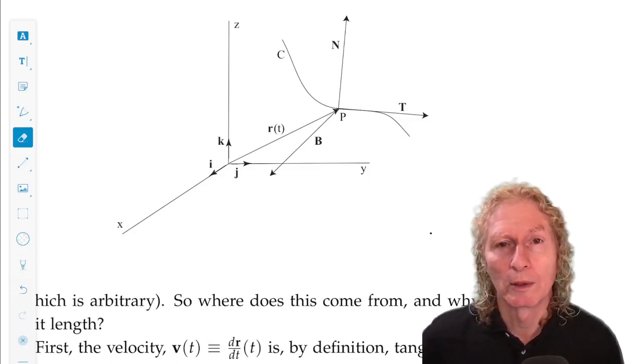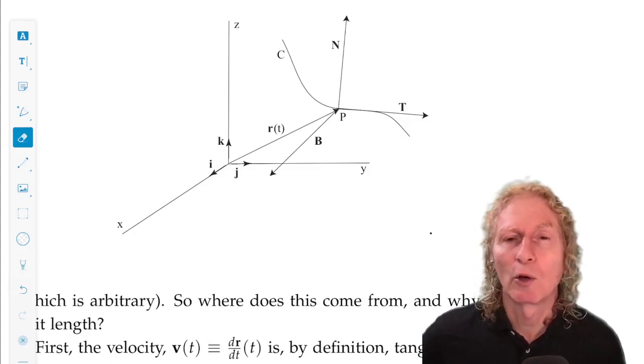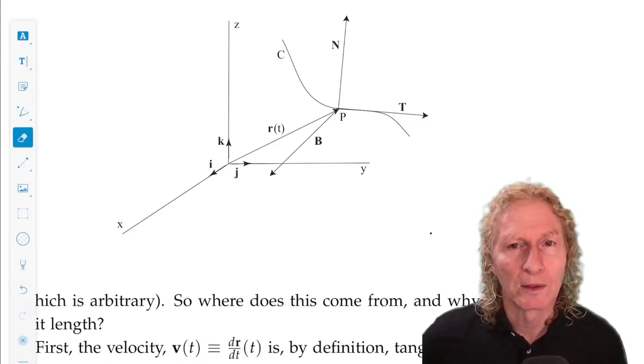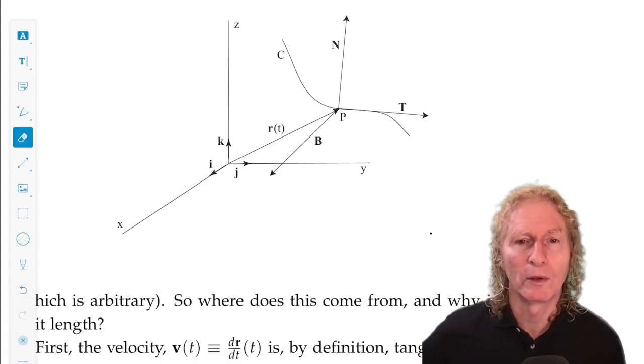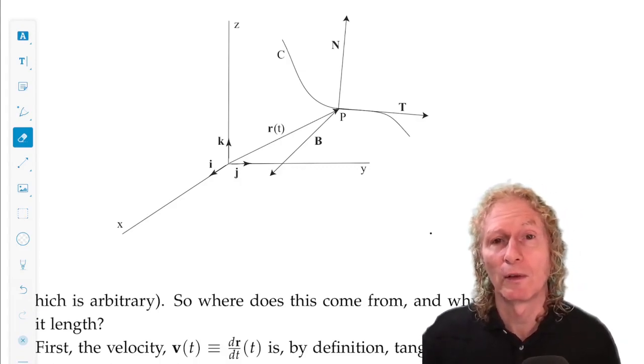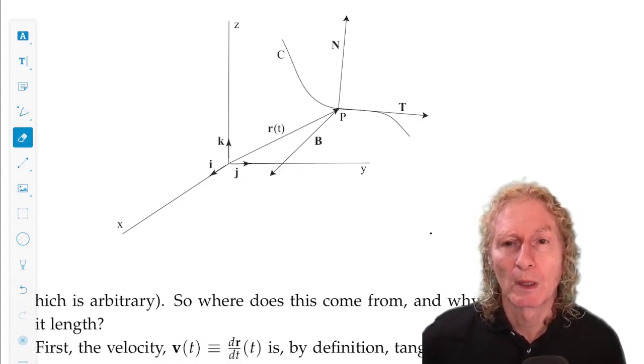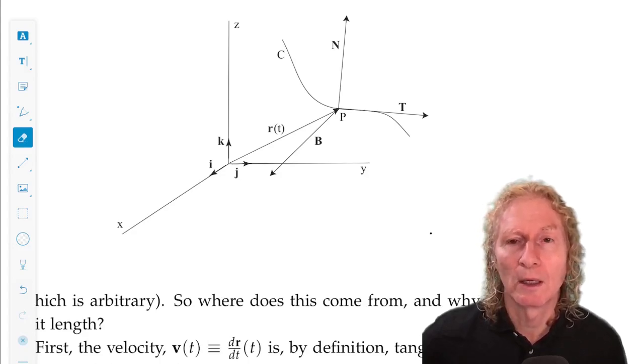Now what we're going to do is derive a coordinate system that's intrinsic to that space curve. So at every point we're going to derive a coordinate system. What does it mean, derive a coordinate system? At each point we're going to construct a set of mutually orthogonal unit vectors.